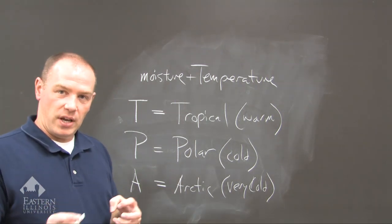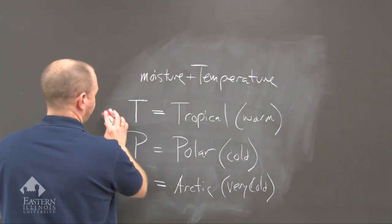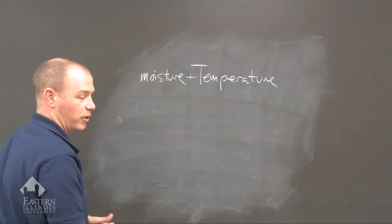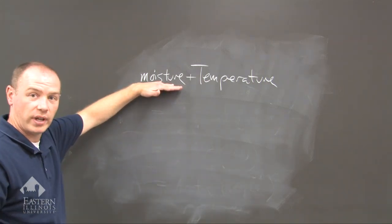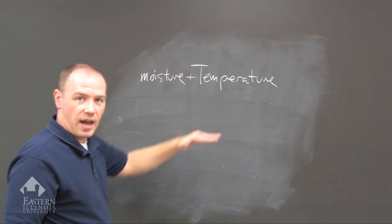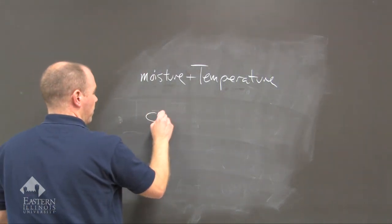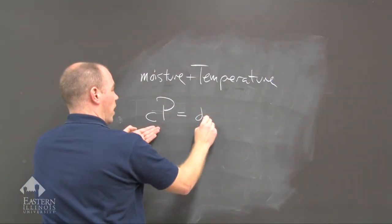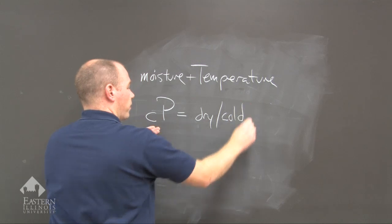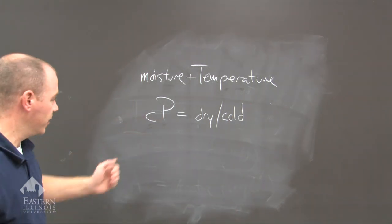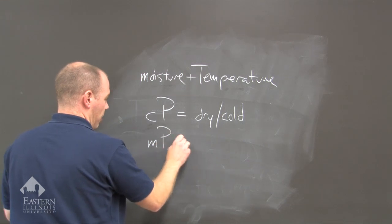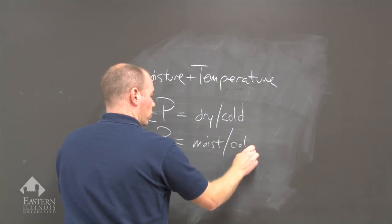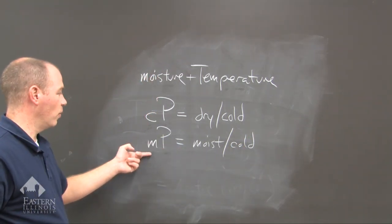Let's take these abbreviations and put them together. The proper procedure is that moisture goes first in lowercase, then temperature goes next in capital. So we have a CP air mass — continental polar — which means dry and cold, originated over land. We have an MP air mass, which means moist and cold.